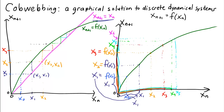We can see from the graph that x_4, x_5, x_6, and x_7 follow in succession. In fact, if we kept going we would get closer and closer to the point where the graph of the function intersects the diagonal line. This procedure is called cobwebbing because the horizontal and vertical line segments can look like a cobweb. Cobwebbing is a nice graphical method that allows us to visualize the behavior of the solution to a discrete dynamical system.